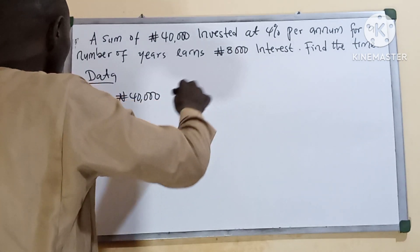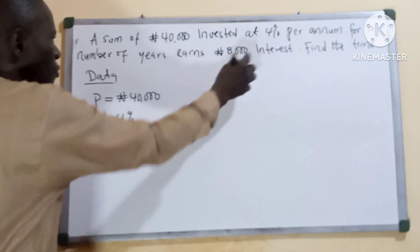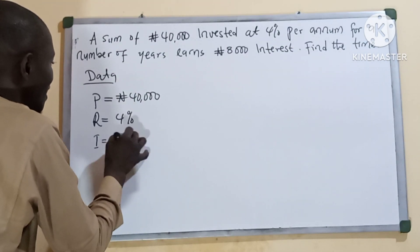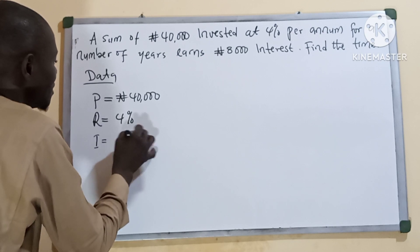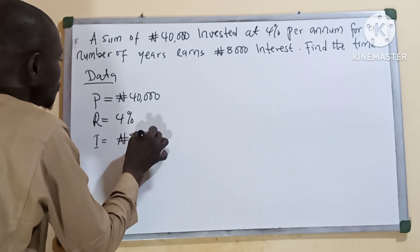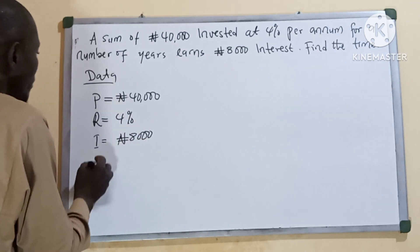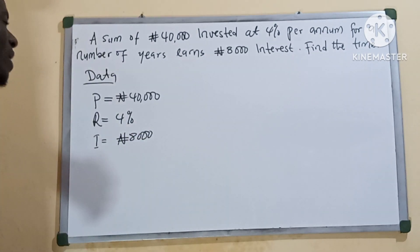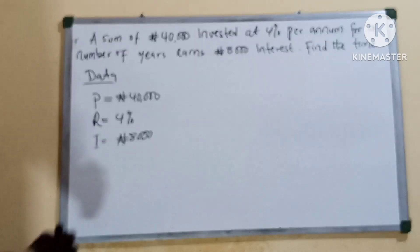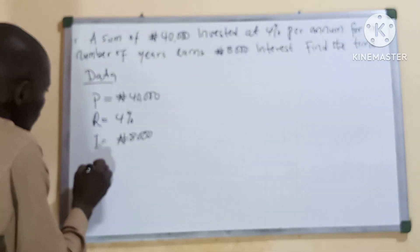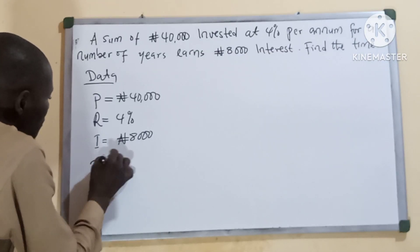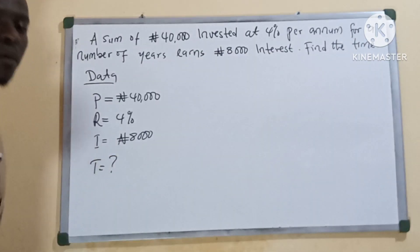Then we have our interest I — after so many years we have I equals 8,000 Naira. Then we are looking for what? We are looking for time T.